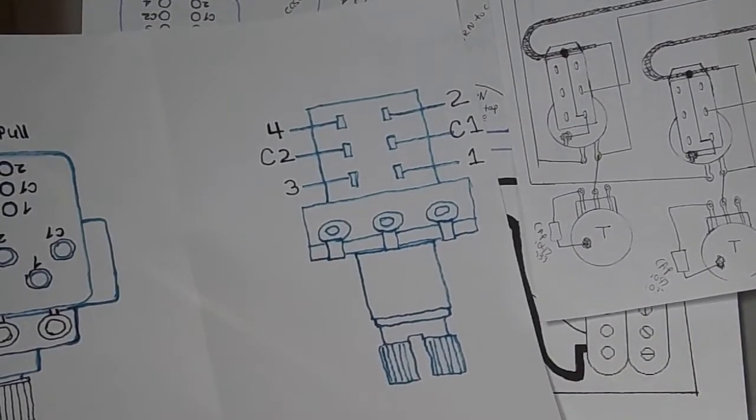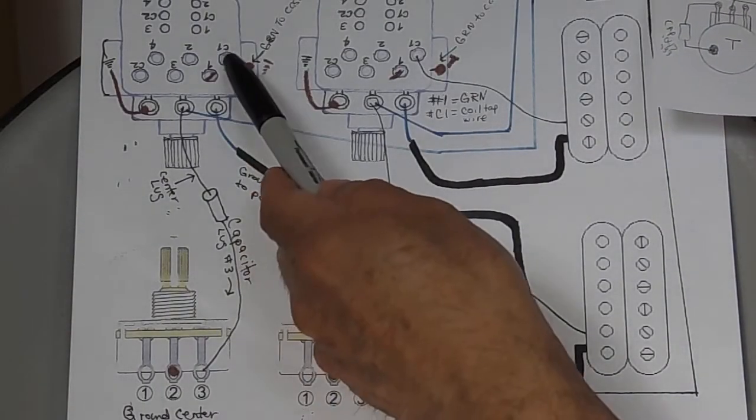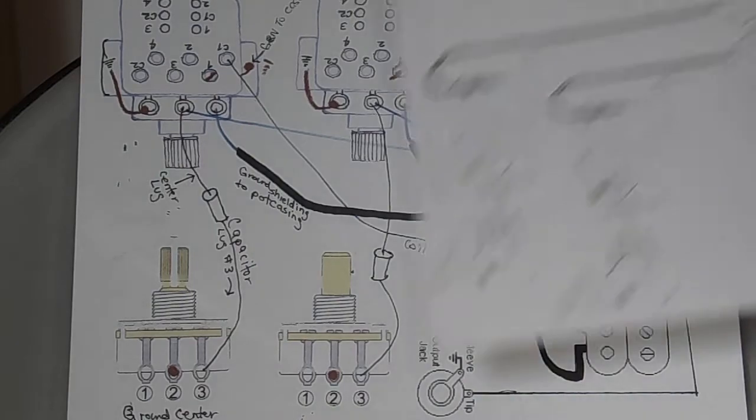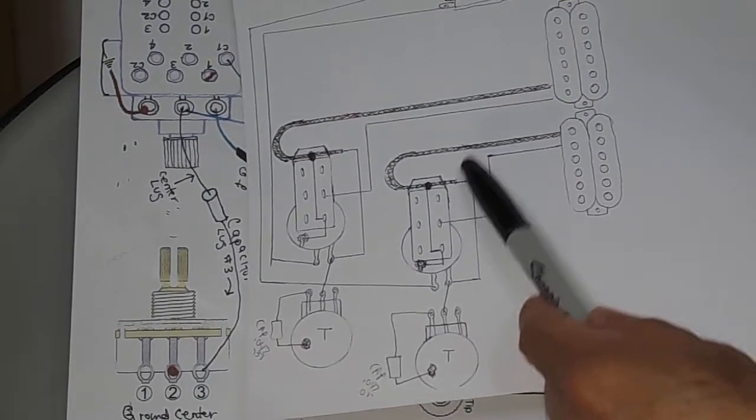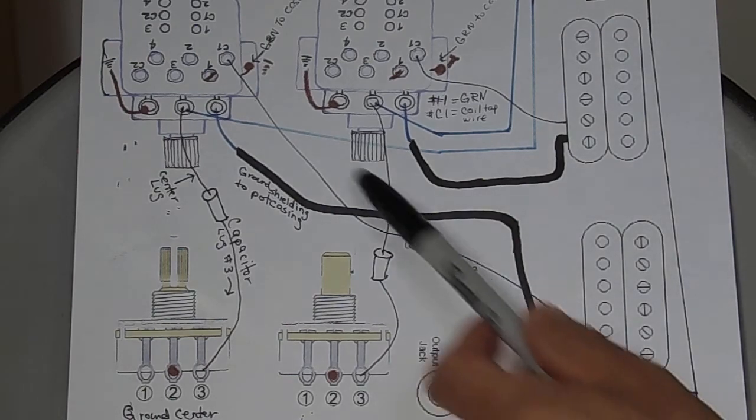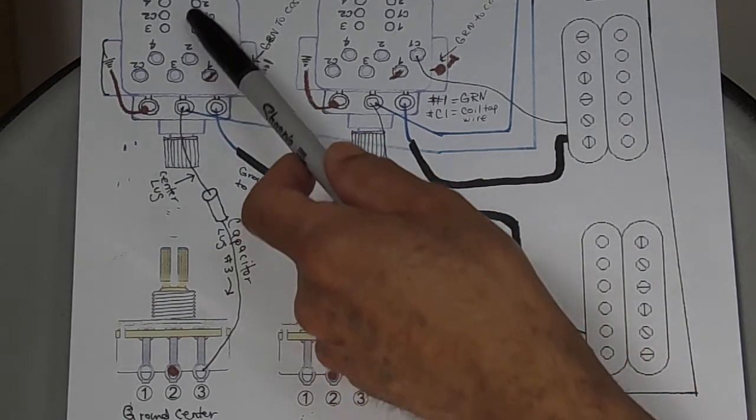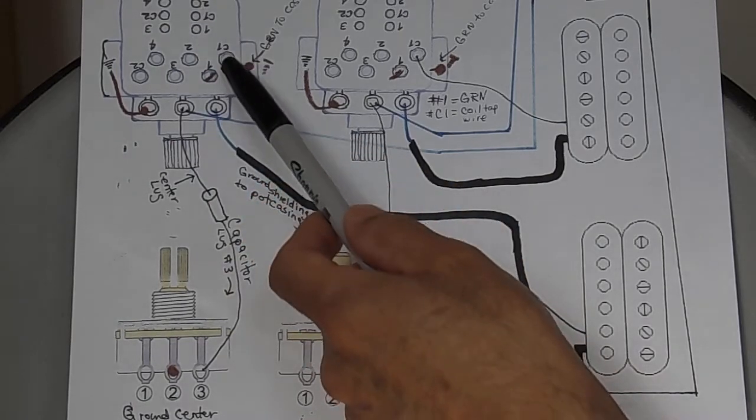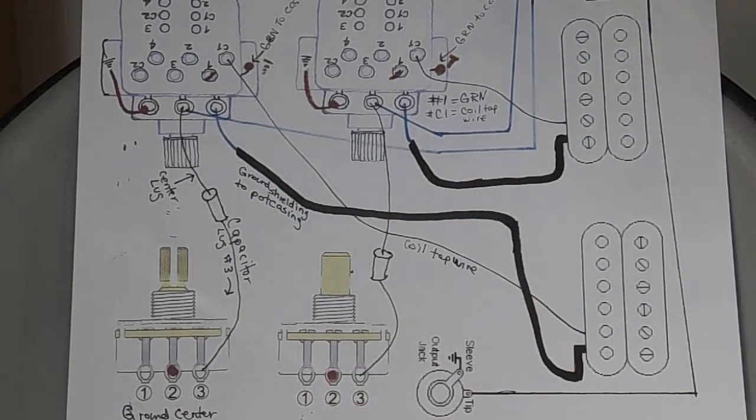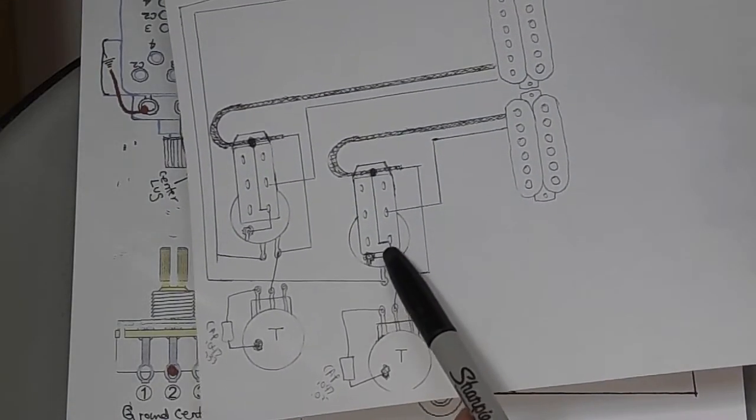On this classic one, second one on the right is C1. So I used C1. C1 here is the color tab wire. C1 goes here for C1. C1 corresponds with the classic one, C1, second one on the right.